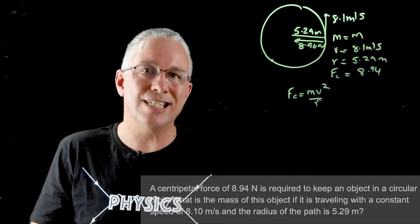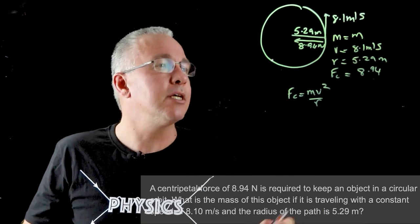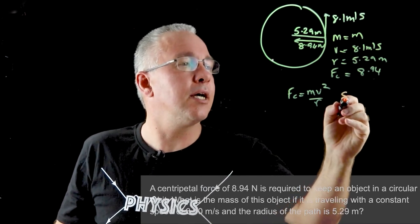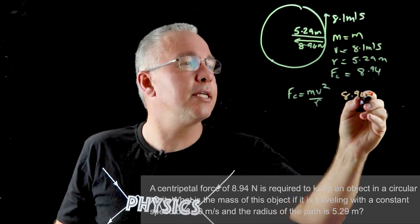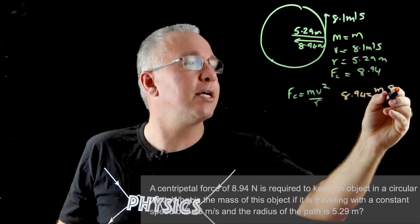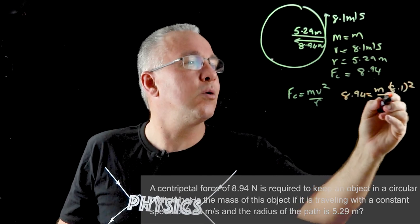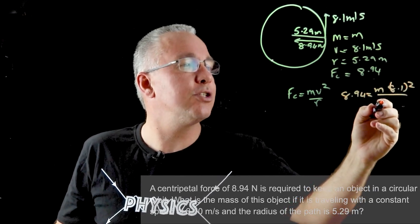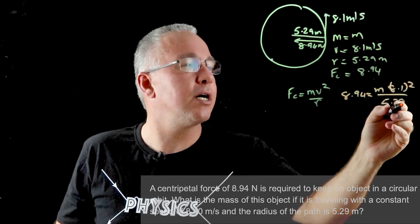Now what you then do of course is substitute everything in. So fc is 8.94, that is equal to our unknown which is our m multiplied by v squared which is 8.1 all squared, all over our radius which is 5.29.